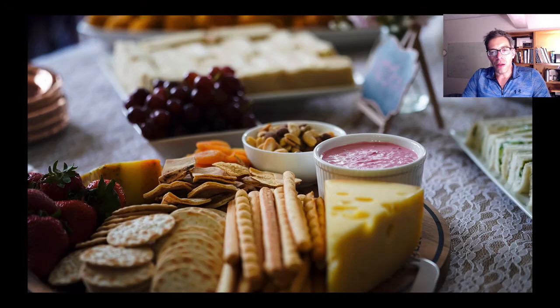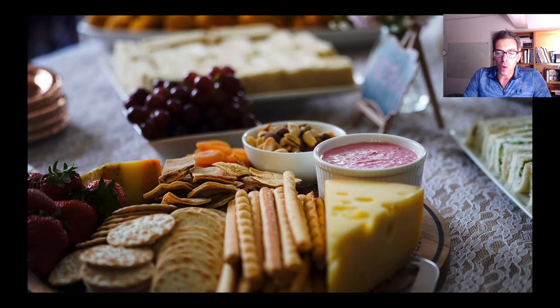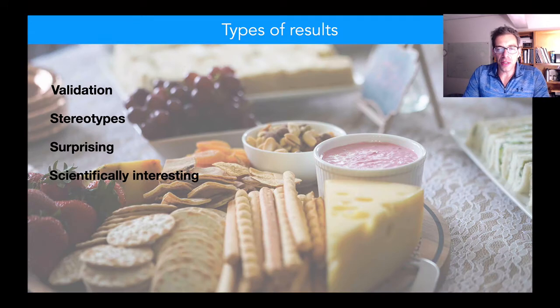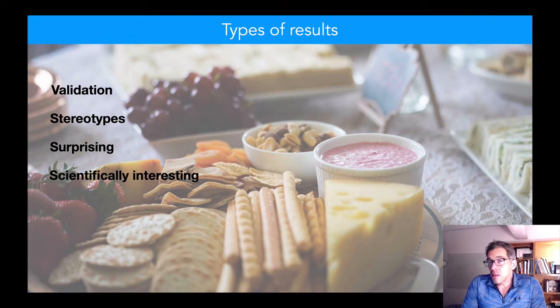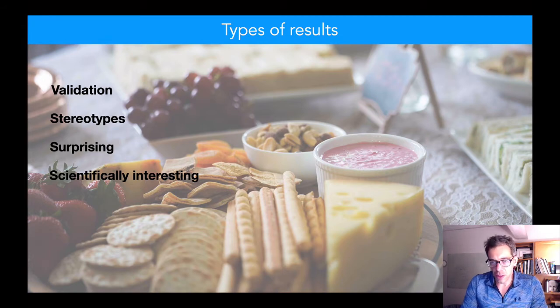Now I'll show you just a sampling of the data. The results come in roughly four forms. There are validations, things which, if they're not true, there's probably something wrong with our survey. Results that sort of confirm stereotypes that are likely to be true. Things that are maybe a bit unexpected. And then some results that are of perhaps genuine scientific interest.